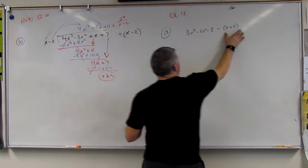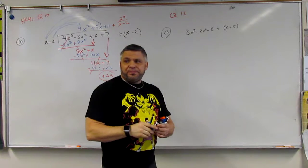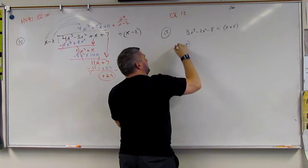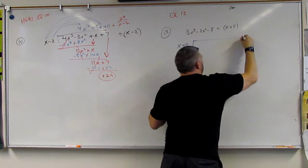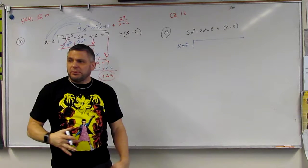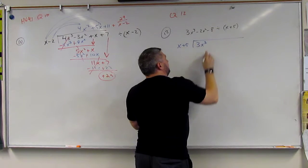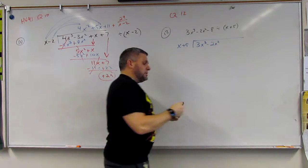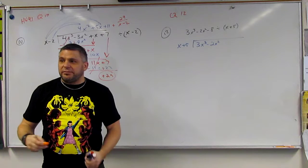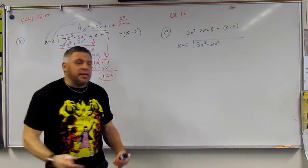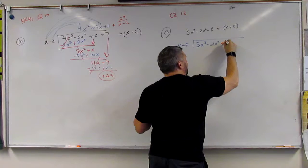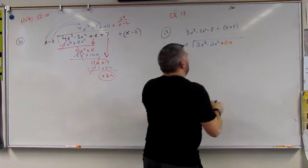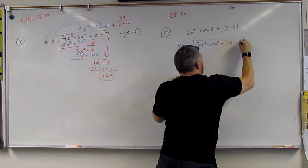First things first, I need to put this out in front. So I'm going to go x plus 5 divided into 3x cubed minus 2x squared. And we can't do the minus 8, because I need an x plus 0x and then minus 8.